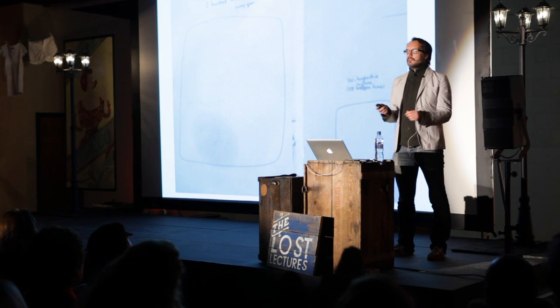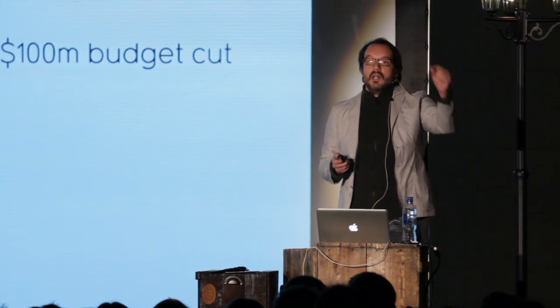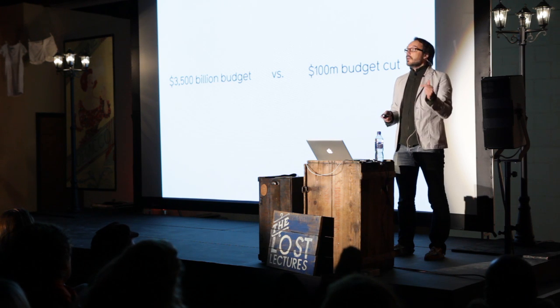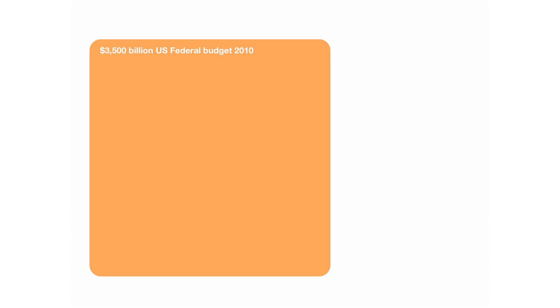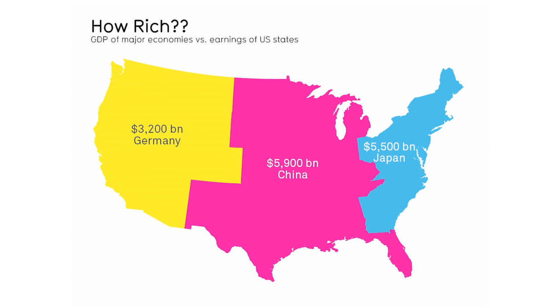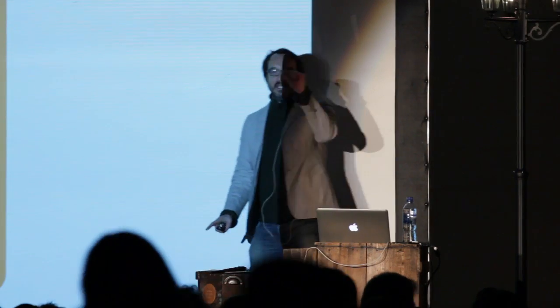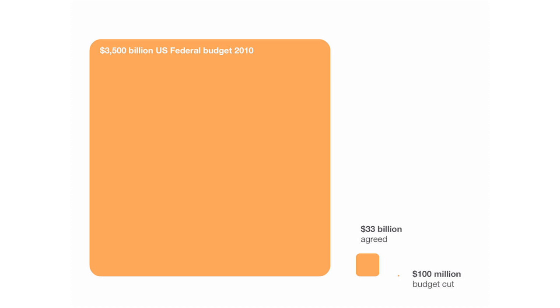President Obama announced the federal budget of America — $3,500 billion, more than the GDP of Germany — and at the same time said they'd cut 100 million dollars. People thought, "100 million cut, that sounds good." Let's just look at that. $3,500 billion U.S. federal budget, and we cut 100 million — it's this tiny pixel. Next time you hear "100 million" from politicians, have a look around; they might be waving their hands to distract you. In the end, they decided to cut $33 billion — you decide for yourself whether that's fair.